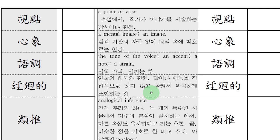완곡하다는 게 뭐지? 완곡하다는 건 부드럽게, 듣는 사람이 편안하게. 그걸 완곡한 표현이라고 하는 거예요. 우회적이라는 말은 직설적으로 말할 수도 있지만, 그것을 돌려서 알아듣기 쉽게 다른 방법으로 말하면 그 사람 기분이 상하지 않게. 그게 바로 우회적 표현.